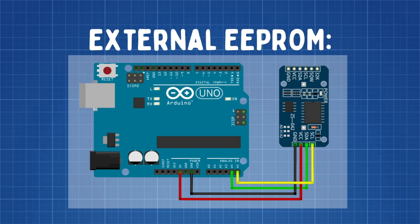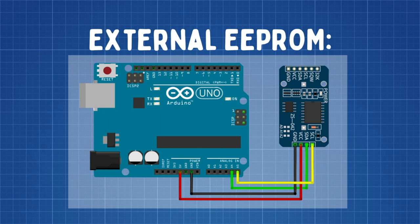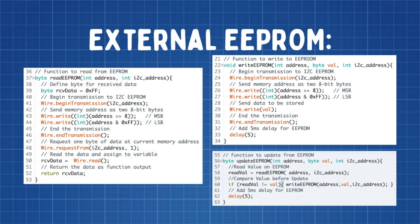In order to use the external EEPROM, you will need to connect it to your Arduino using an I2C bus. I2C is a method of serial communication between many devices using only two wires, also known as the bus. To program the Arduino with an external EEPROM, you cannot directly use the Arduino EEPROM library. Instead, you need to create your own read, write, and update functions using the I2C library. Those functions need to send the byte address to the EEPROM and transfer the data between the EEPROM and the Arduino.